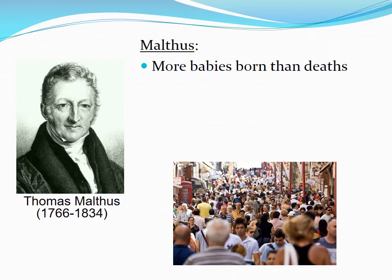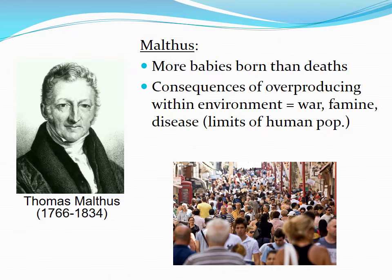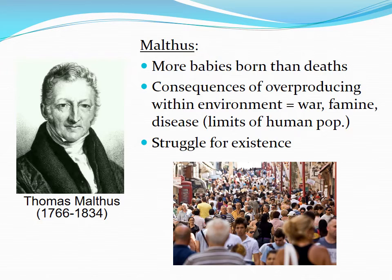The last person who contributed to Darwin's theory was Thomas Malthus, an economist. His big idea was that in human populations, more babies are born than there are deaths, leading to overproduction. When populations become too large, war, famine, and disease result, creating limits on population size. This overpopulation causes a struggle for existence where some individuals survive and others do not — a kind of early idea of natural selection, though Malthus was only looking at human populations.